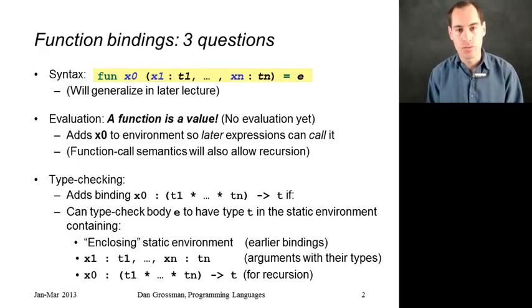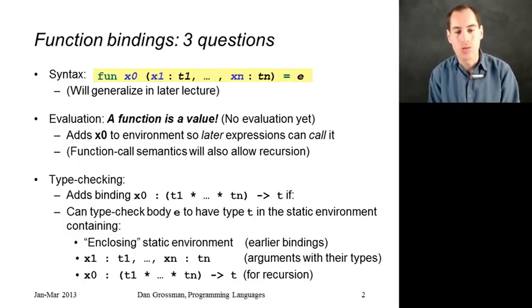Let me do evaluation rules next, because this is so simple it may seem strange. A function is already a value. When we have a function binding, we add x0 to our dynamic environment so that later expressions can call that function, and that's all we do. We don't evaluate that function body until we call the function. So, take away message: a function is already a value.